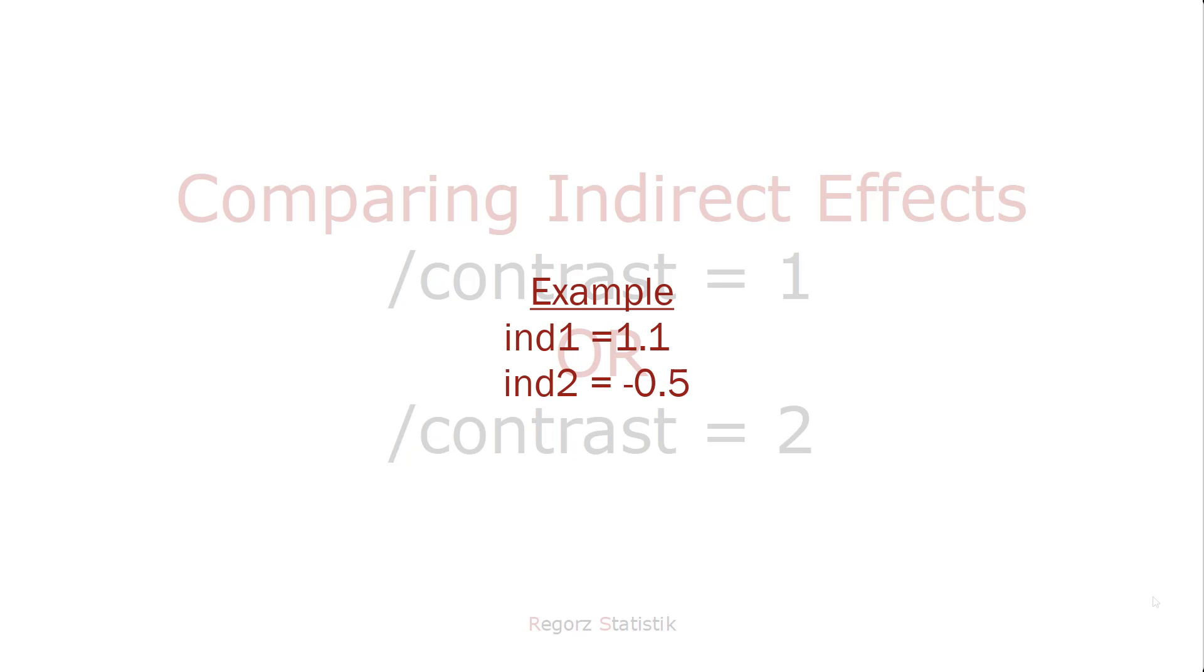For instance, if you have one indirect effect with a regression weight of 1.1 and the other with a regression weight of minus 0.5, then this contrast would be 1.6, because that's the difference between 1.1 and minus 0.5.